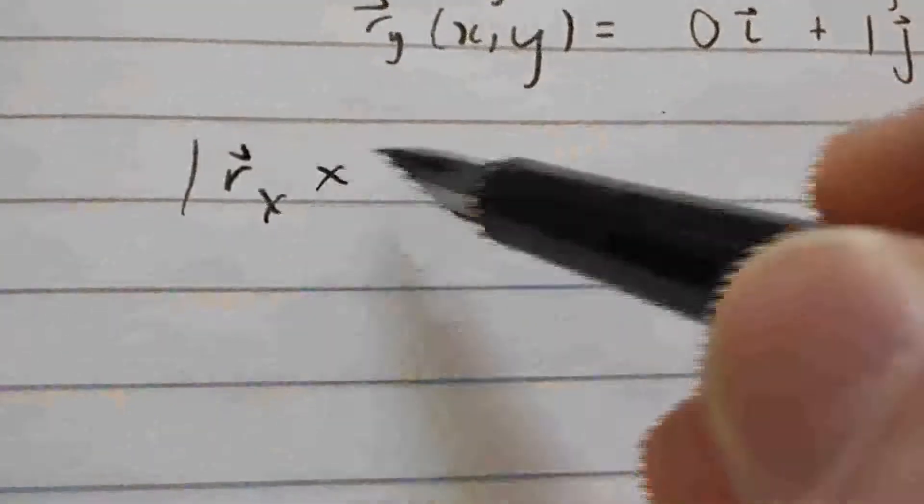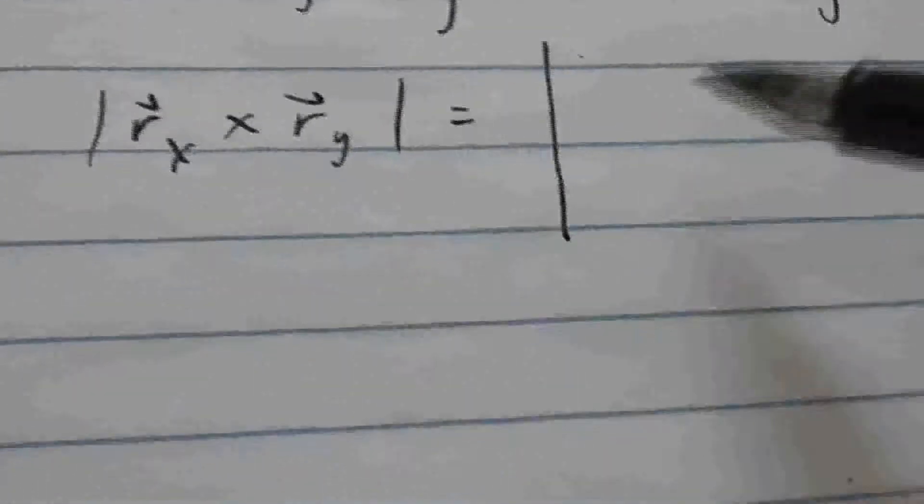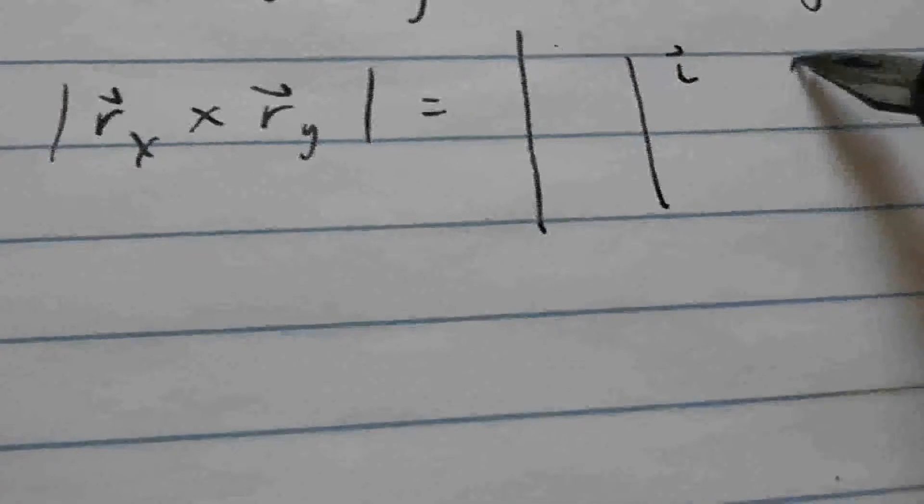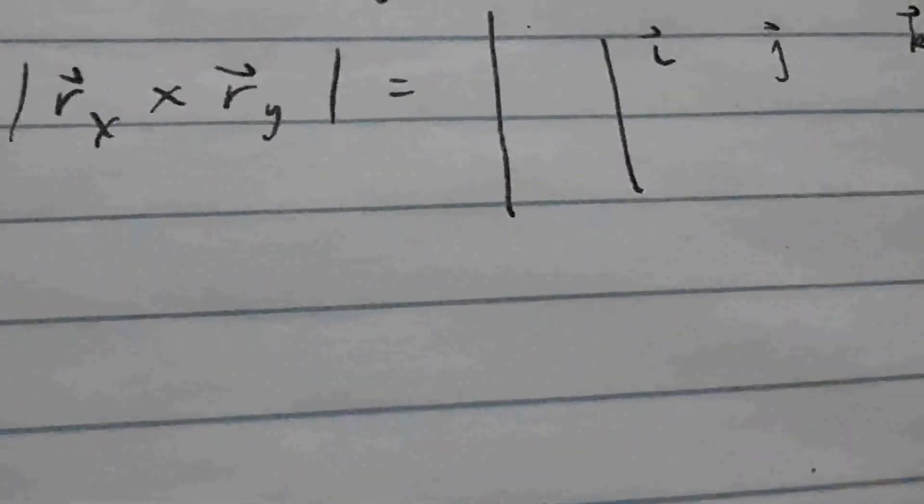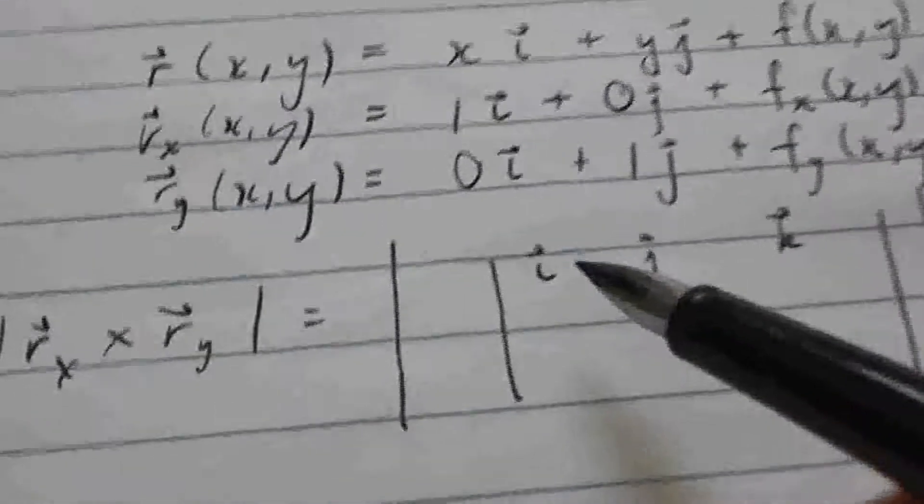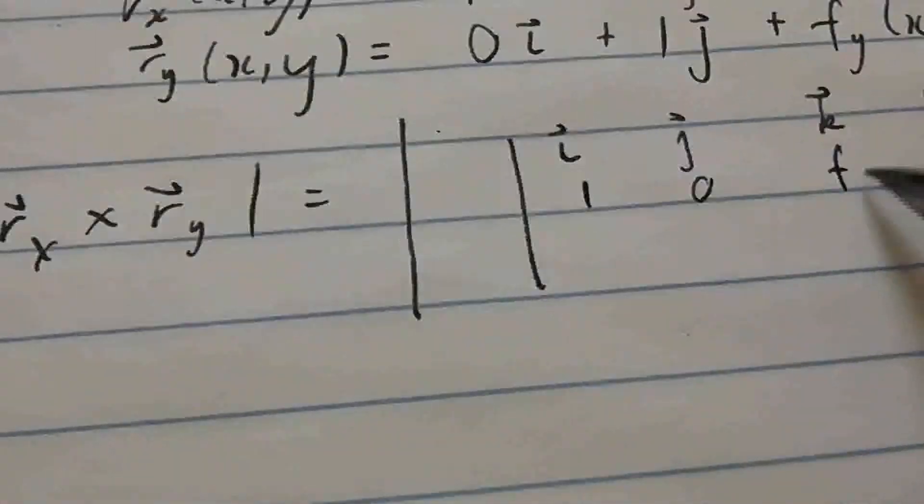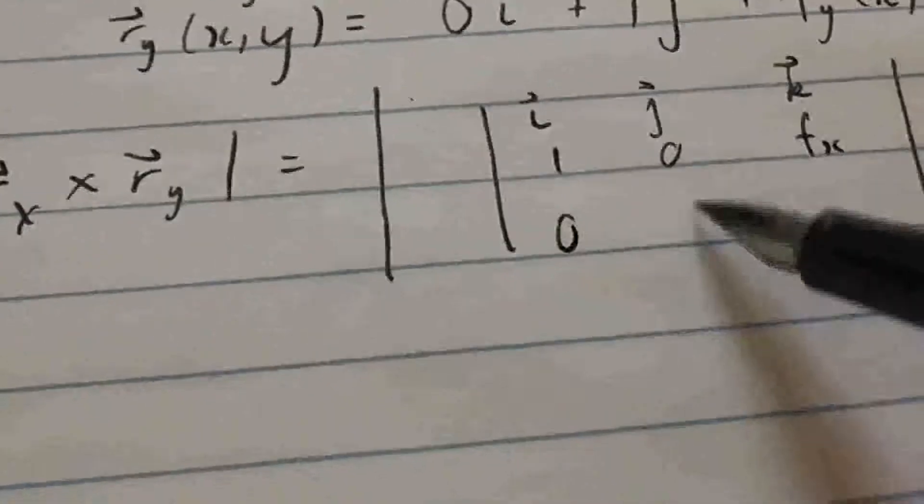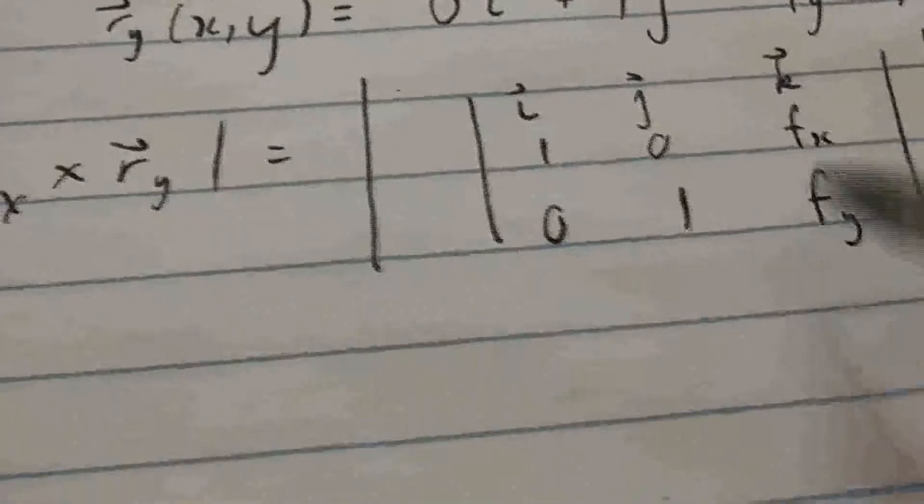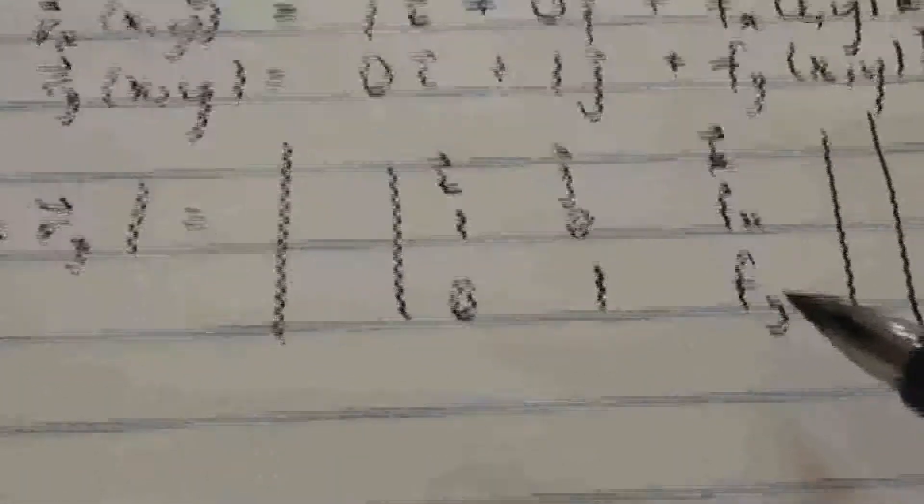Now we want to know the magnitude of rx cross ry. So that's the magnitude of this determinant. So when we take the rx is one, zero, f sub x; r y is zero, one, f sub y. Where here, rx, ry, fx, and f y all depend on x and y.